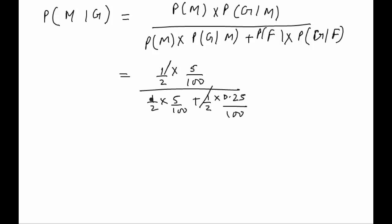So half, half and half gets cancelled. 100, 100, 100 also gets cancelled. We are left with 5 upon 5.25, which is 500 by 525, or 20 by 21. So this will be the solution to our problem.